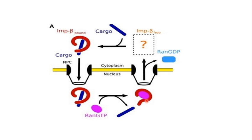The importin beta and Ran-GTP complex moves back into the cytoplasm by the same mechanism — importin beta utilizes its HEAT repeats to interact with the FG sequences of the nuclear pore complex. In the cytoplasm, the GAP protein converts Ran-GTP into Ran-GDP. This Ran-GDP is transported back into the nucleus by the NTF2 receptor. Inside the nucleus, Ran-GEF converts it back into Ran-GTP, and importin beta is now free in the cytoplasm and available for another round of cargo transport into the nucleus.